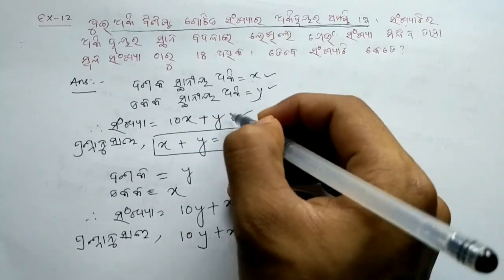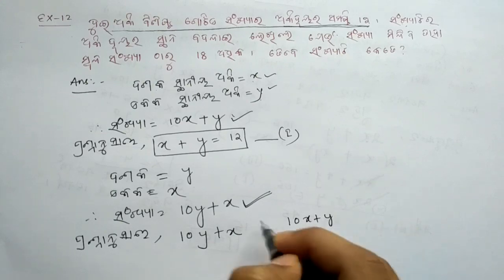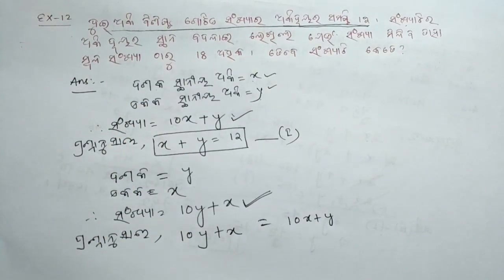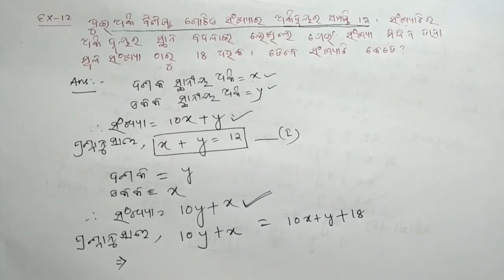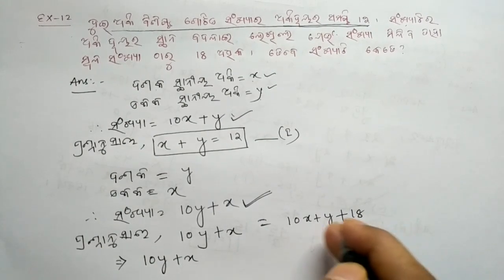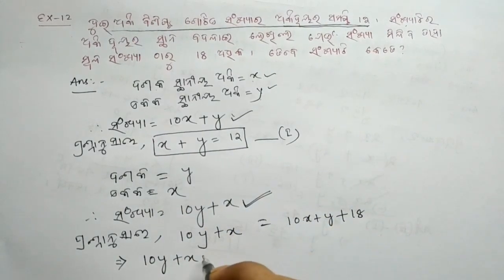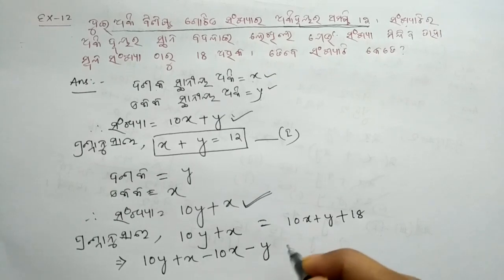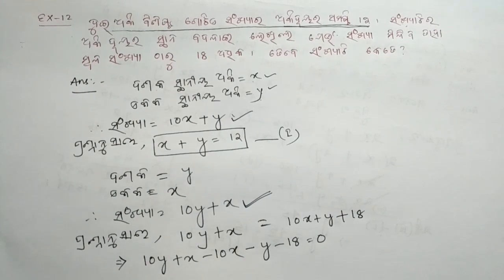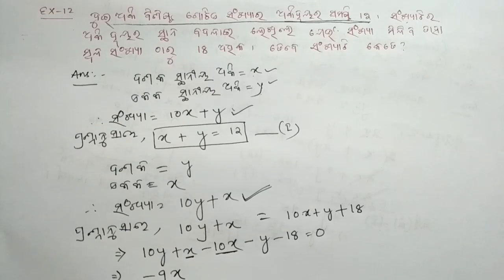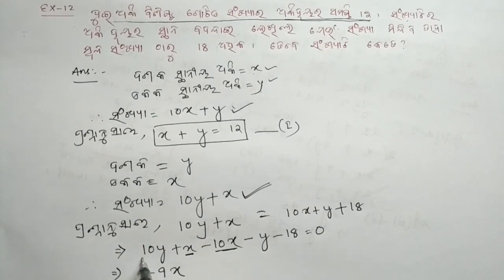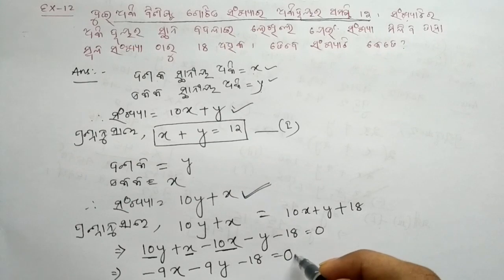The original number is 10x plus y. The number after interchanging digits is 10y plus x. The difference between the reversed number and the original number gives us the condition: xy minus 9y minus 18 equals 0.